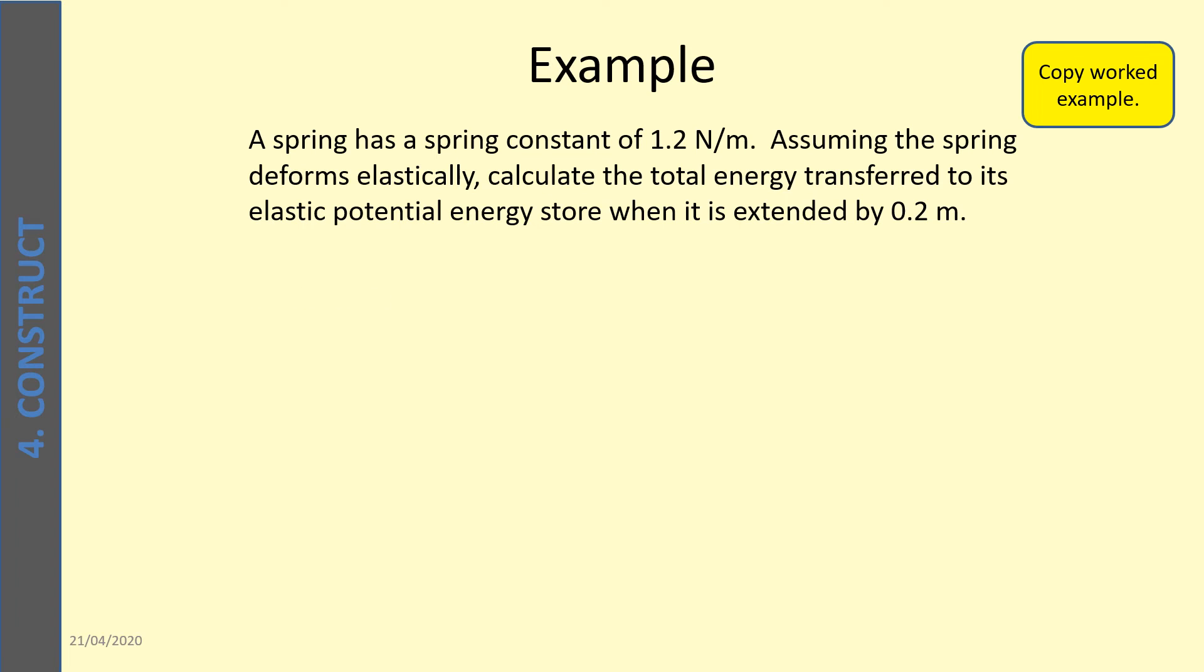So first of all, let's write down what we know. We know k, the spring constant, that's given in the question, and we know the extension. Luckily for us, it's already in meters, so we don't need to convert it. Then all you need to do is remember your formula, substitute in the figures, and use your calculator to give yourself an answer of 0.024, and remember your units. This is energy, so your units are joules.